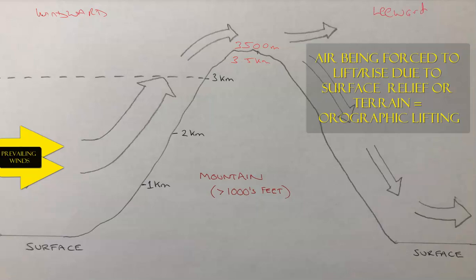This wind, this air mass, is 20 degrees Celsius at the surface — which could be through a combination of conduction and convection and the prevailing wind. So it approaches the mountain and is forced to ascend; it can't go through the mountain or descend. We have this ascending, rising air over the mountain, over the relief.